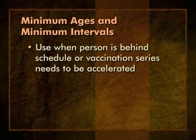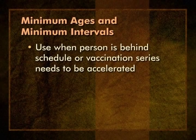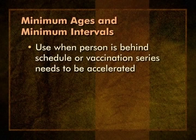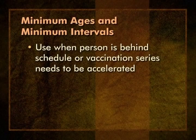The ACIP recommends that providers schedule vaccines as close to the recommended age and intervals as possible. The recommended schedule, age for specific doses, and spacing of doses is supported by data from clinical trials. There are times when it is necessary to give vaccines earlier or closer together than recommended in the routine schedule—minimum ages and intervals can be used when a person is behind on the schedule and it is necessary to catch them up, or when international travel is impending. ACIP believes that the response to doses given at minimum intervals and ages will be acceptable.